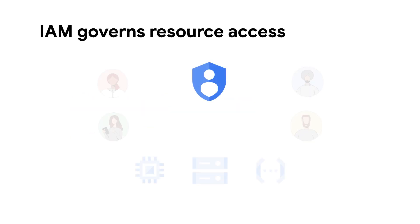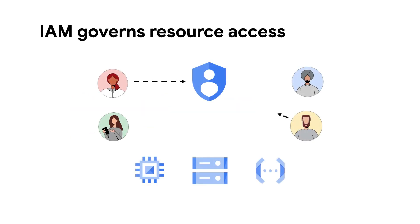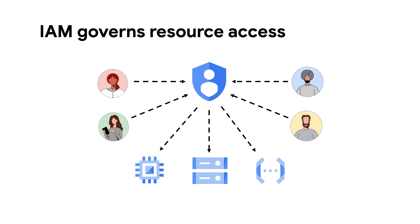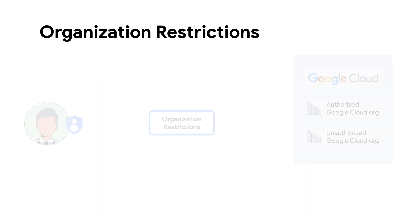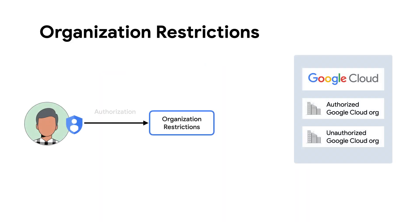You likely already know about how administrators can use IAM policies to lock down who has access to specific resources within their organizational control. However, it is also important for administrators to consider the resources and data their users might access that sit in an unauthorized Google Cloud organization.